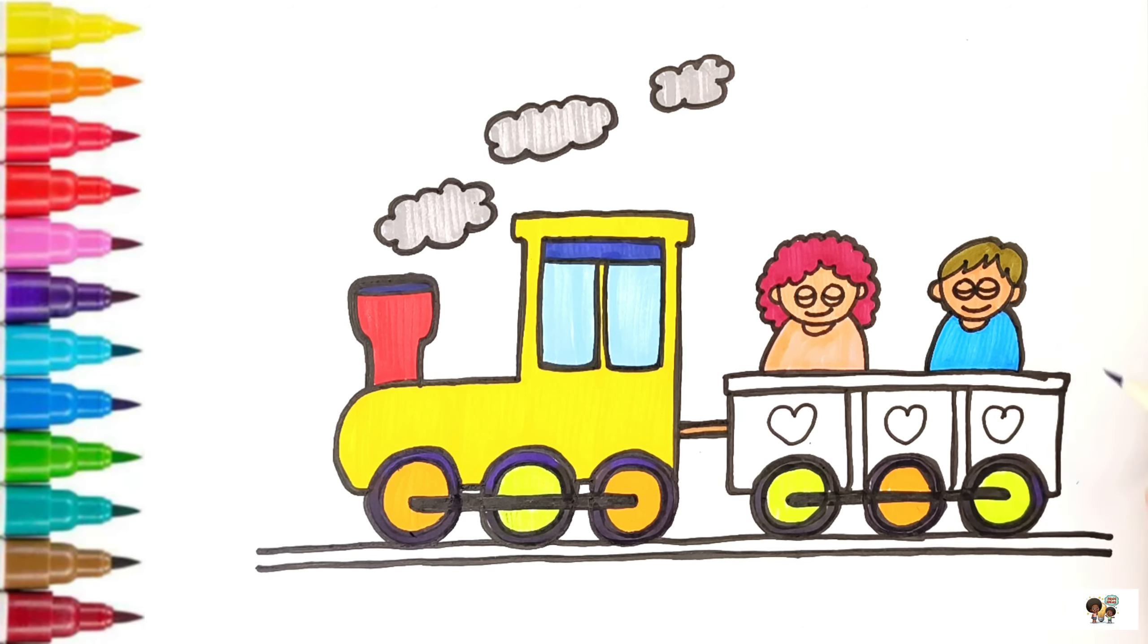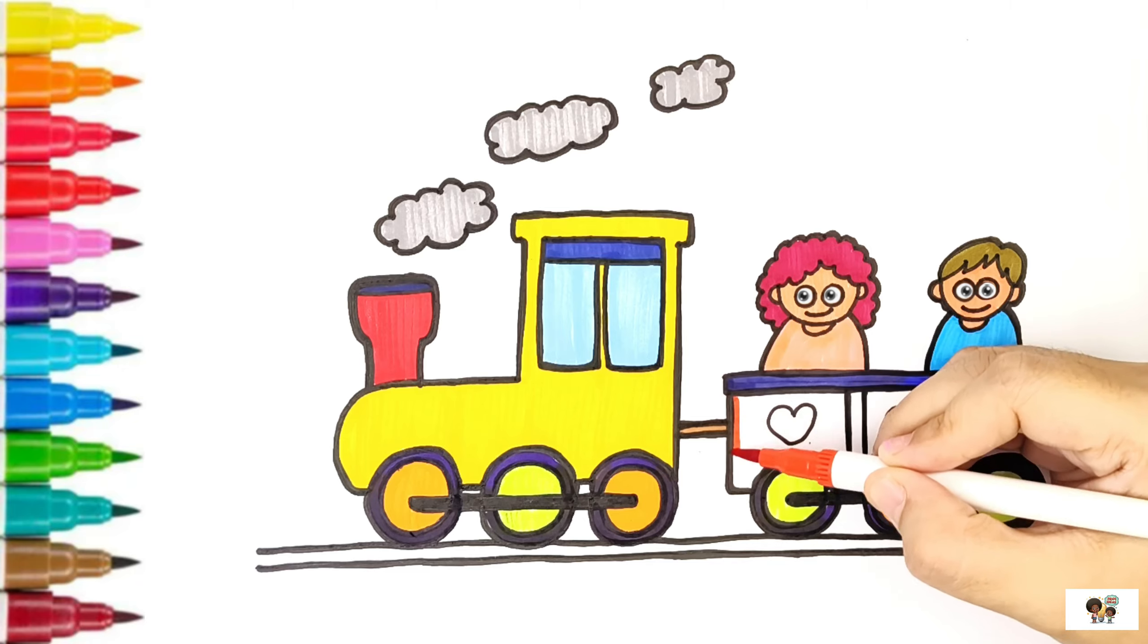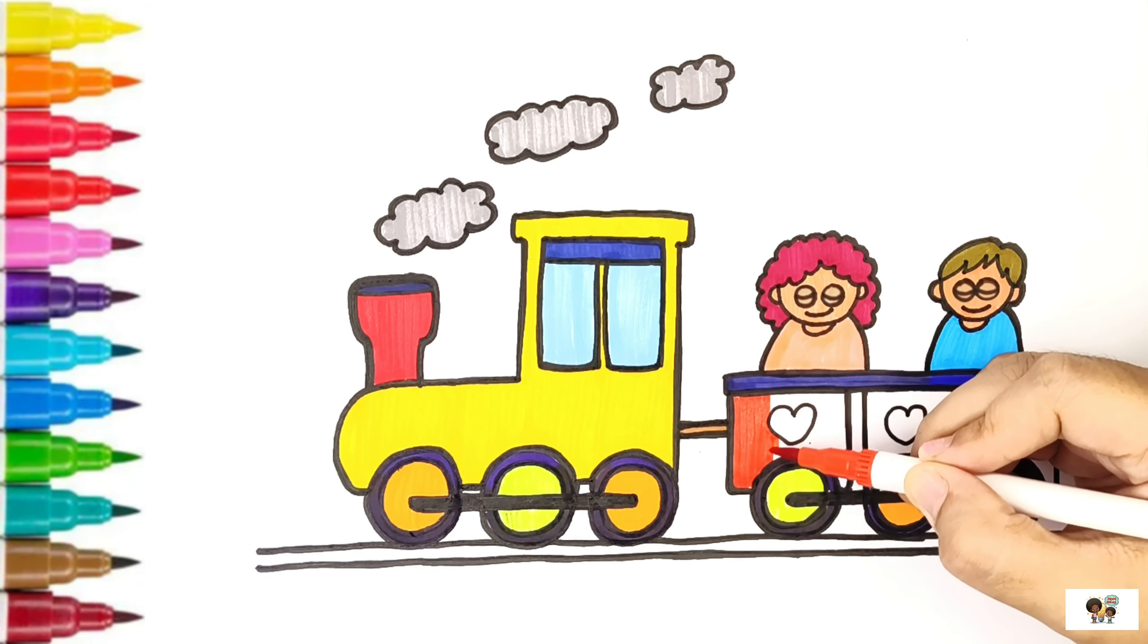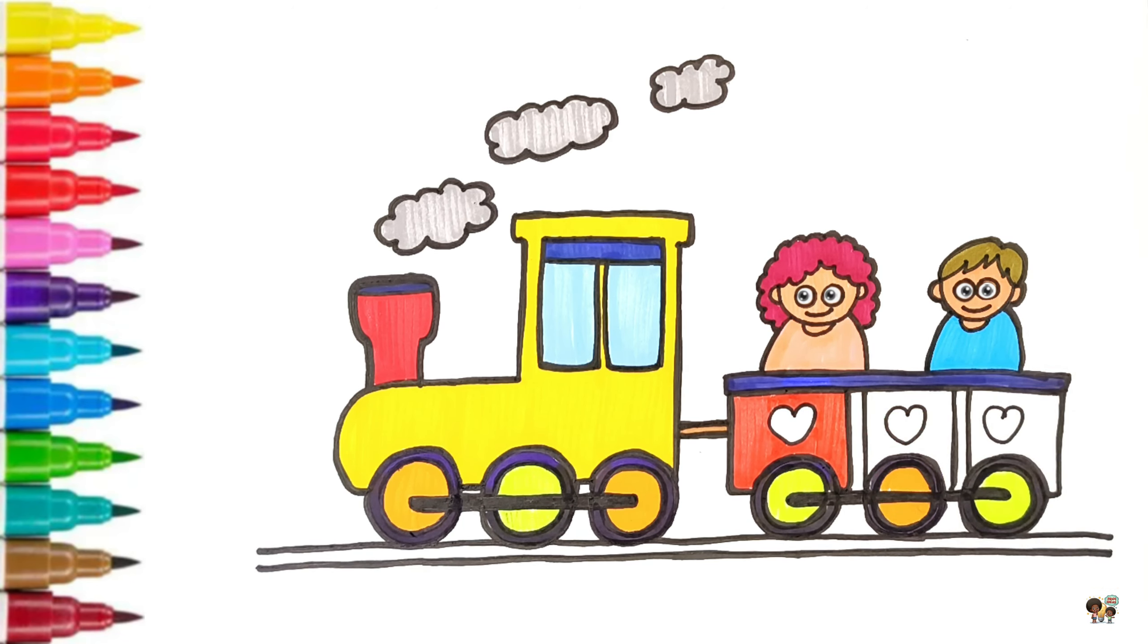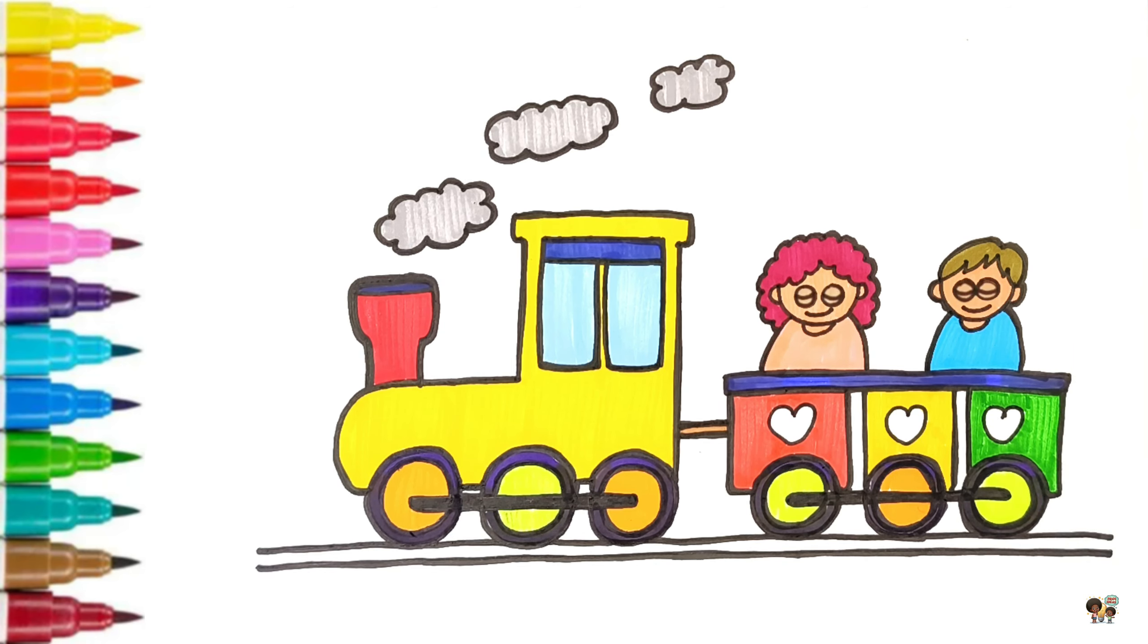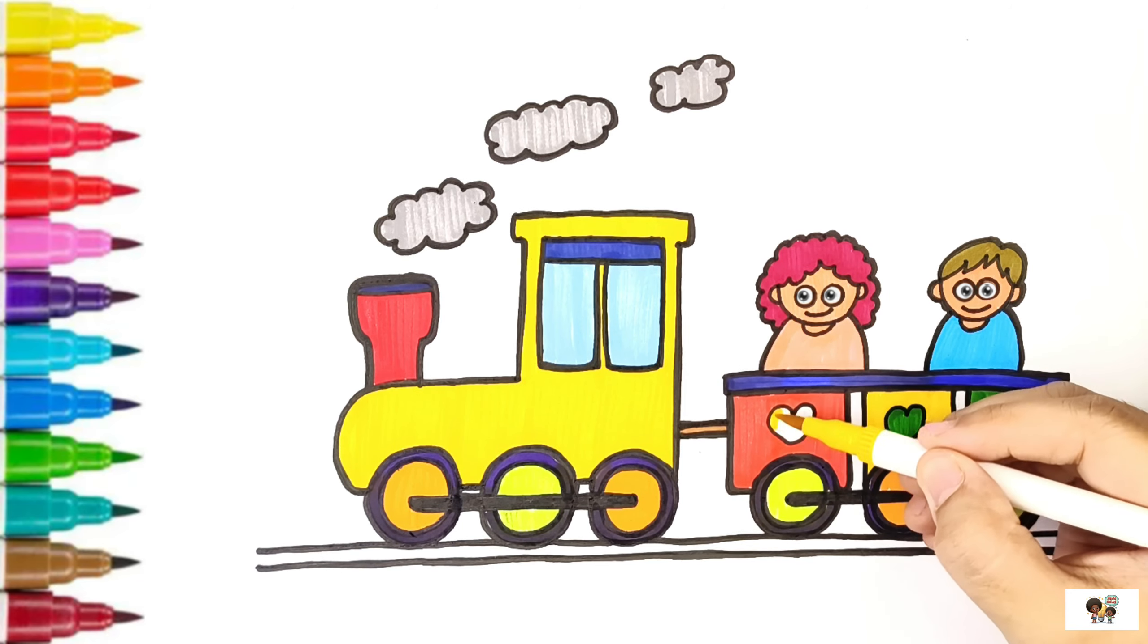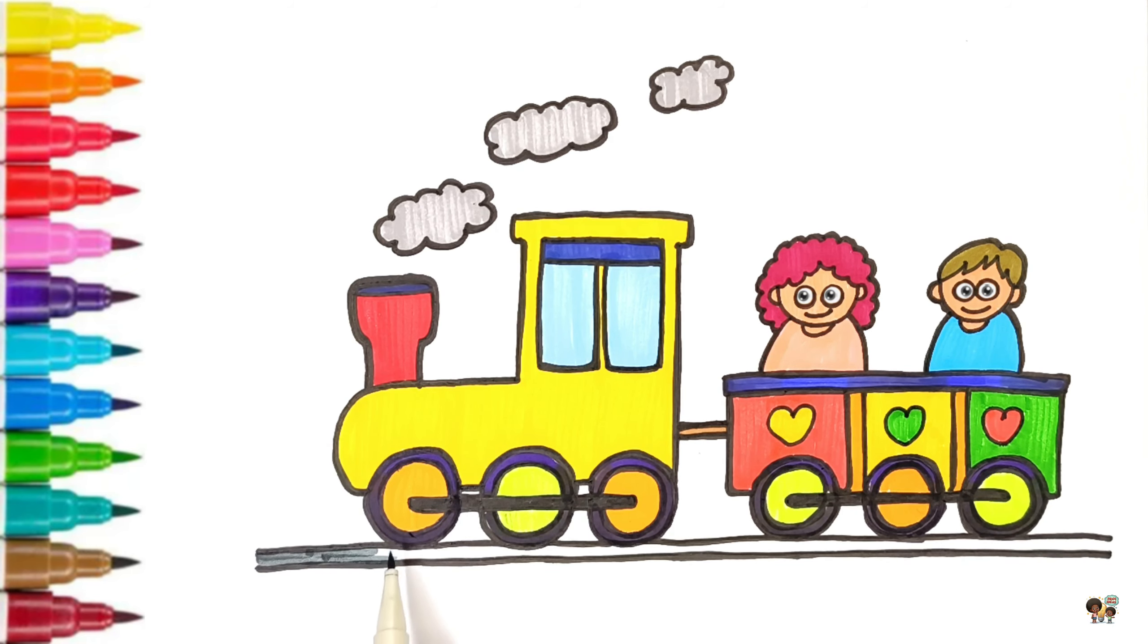Blue. Color the carriage blue, red, yellow, green, red, green, red, yellow, orange. Color the rail gray.